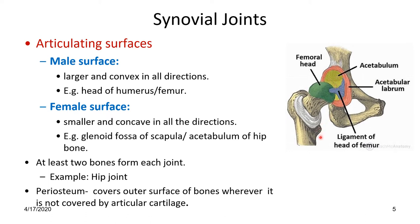At least two bones form each joint. There will be periosteum covering the outer surface of the bones where it is not covered by articular cartilage. Except for the articular cartilage-covered area, the outer surfaces of the articulating bones are covered with periosteum.